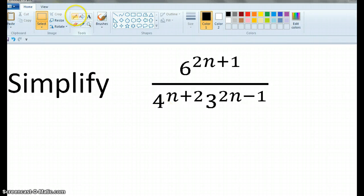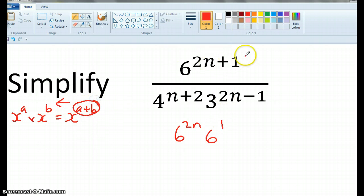First things first, I'm going to use the reverse rule. If x to the a times x to the b is x to the a plus b, I can actually go the other way. So I'm going to have 6 to the 2n, 6 to the 1. So I've actually taken it, adding here, and set it this way. So that's a times sign.